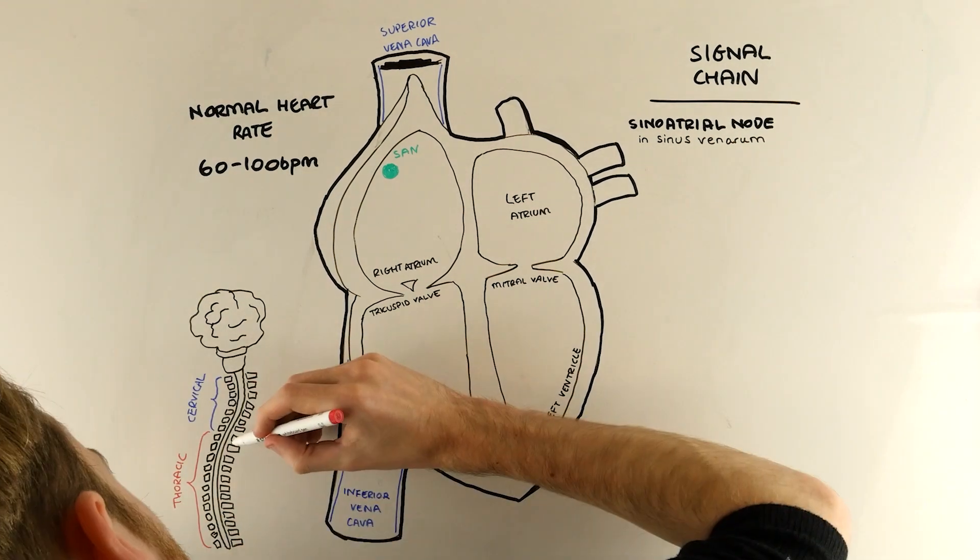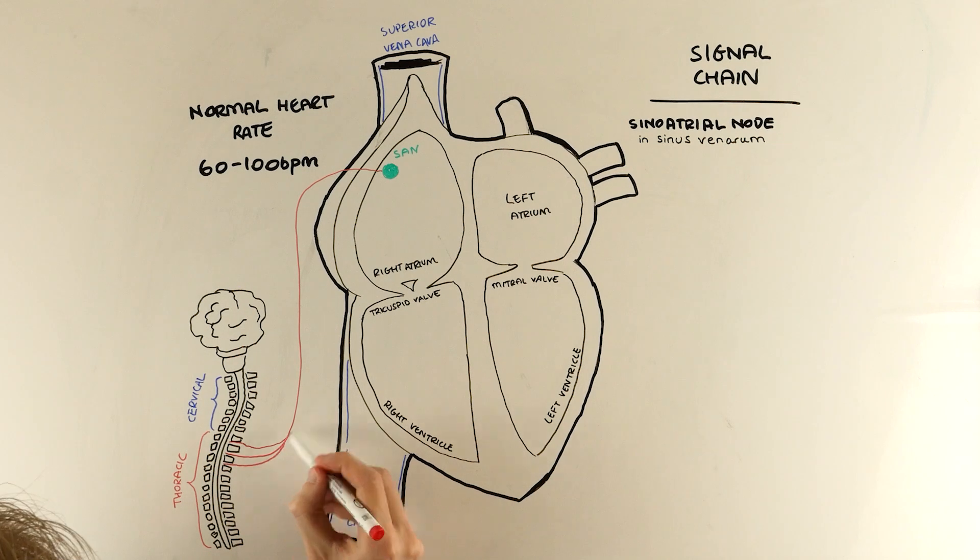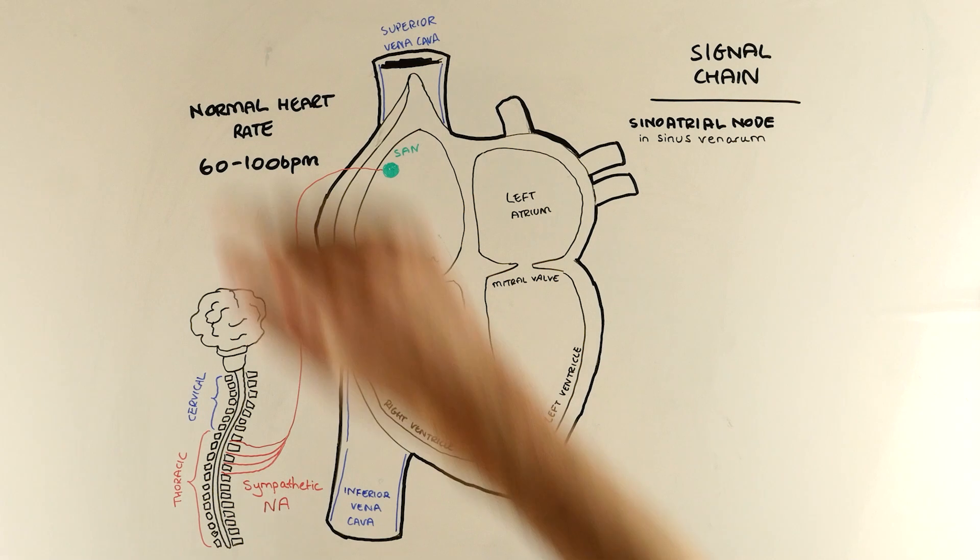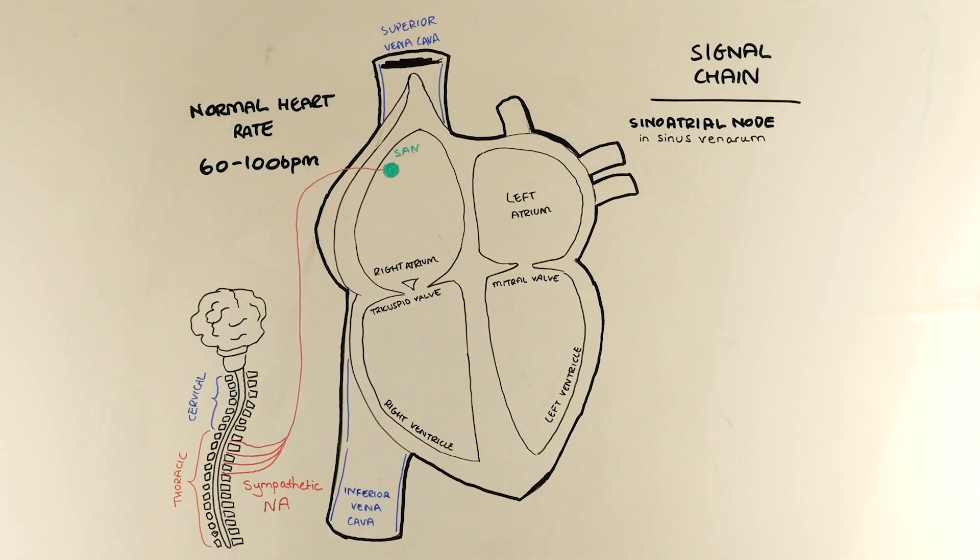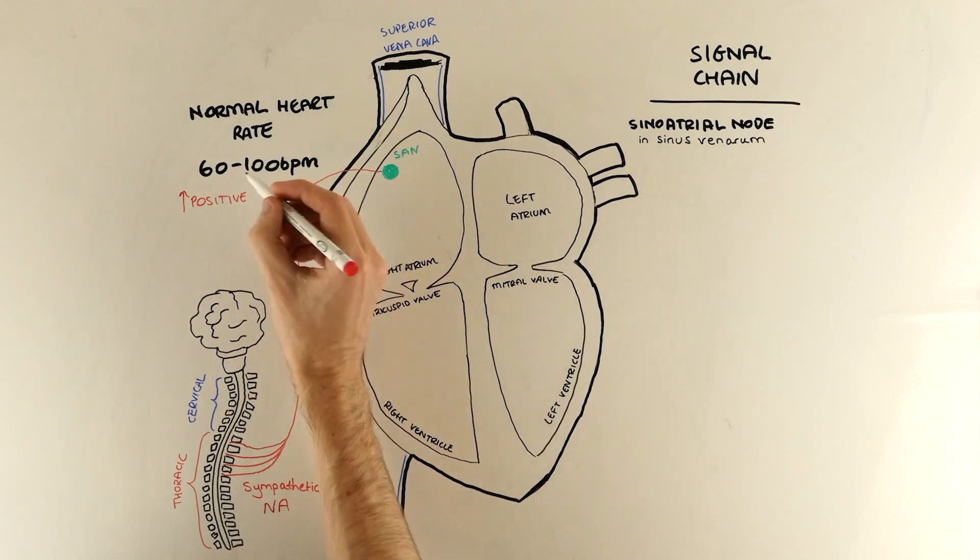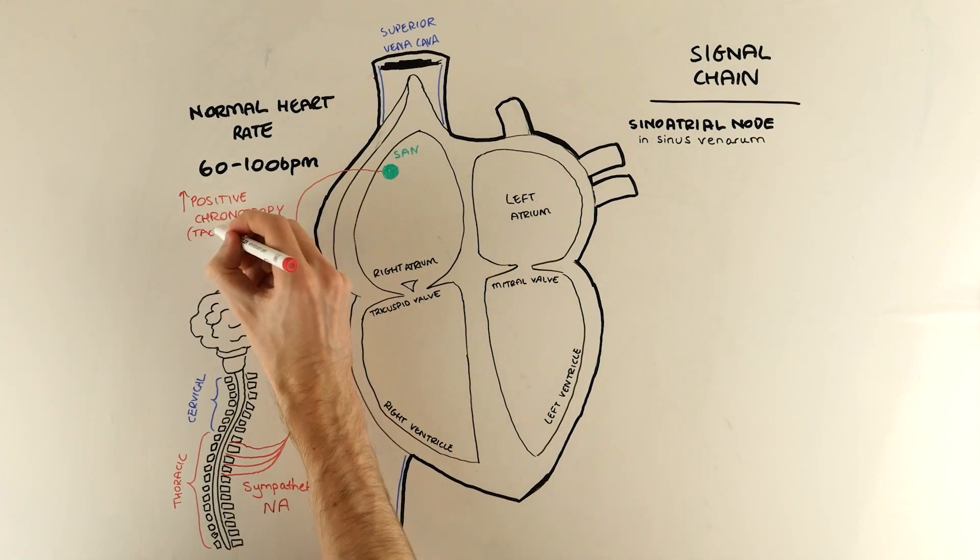Sympathetic supply comes mainly from the T1 to T4 spinal nerves and it uses the noradrenaline neurotransmitter. These nerves make our heart beat more quickly which we call positive chronotropy. If the heart beats too fast we call this tachycardia or fast heart.